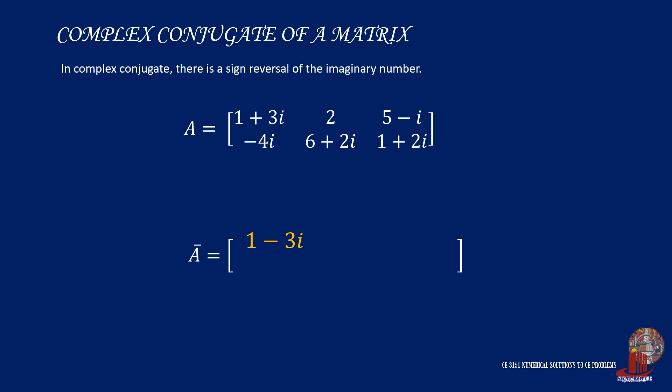With element 1,2, we don't have any imaginary number, but only the real number 2. So we don't have any sign reversal for the element. Next is element 1,3, which is 5 minus i, and its conjugate is 5 plus i.